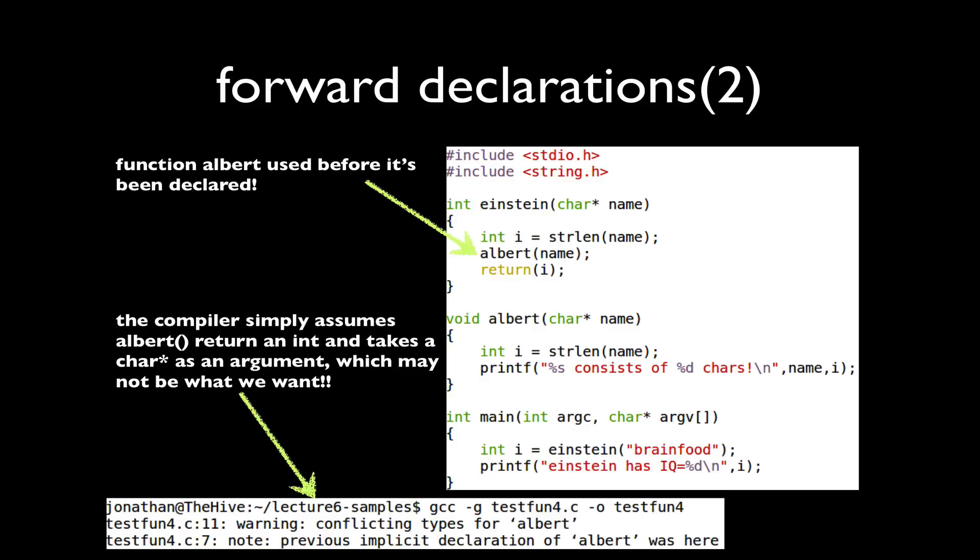But this might not be exactly what we want. As we can see when we actually encounter the function its return type is void. So when I try to compile this with GCC, as I show here, I'm going to get a warning from the compiler that something unusual is happening.